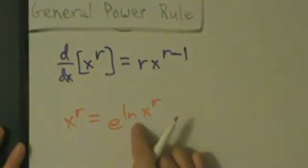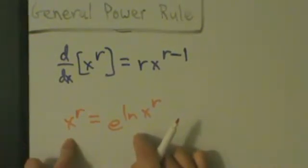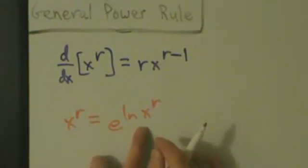Because e and natural log, as functions, they're inverses, right? They cancel each other out, so to speak. So x^r is the same thing as e^(ln(x^r)).